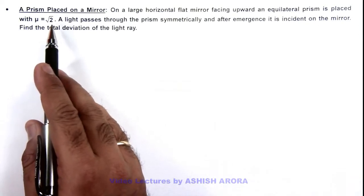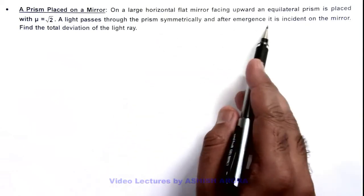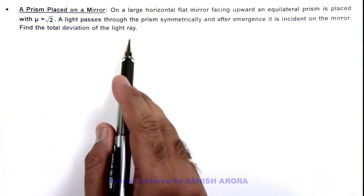It is saying a light passes through the prism symmetrically and after emergence it is incident on the mirror. We are required to find the total deviation of the light ray.